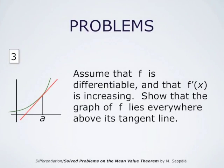In problem number 3, we assume that f is differentiable and that f prime, the derivative, is increasing. Our task is to show that the graph of f lies everywhere above its tangent line, except of course for the point of tangency. So we have to show that if f' is increasing, then the graph of f behaves like the graph shown in the picture on the left.